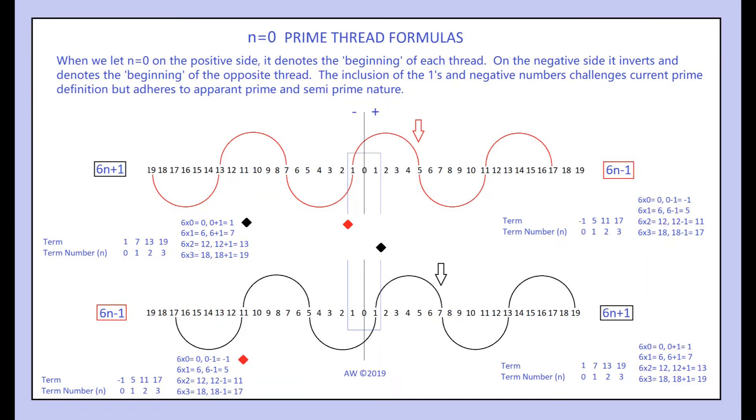Here we're taking a look at n equals 0 in the prime thread formulas. You can see the term number 0 has been added in the positives for both threads and in the negatives.